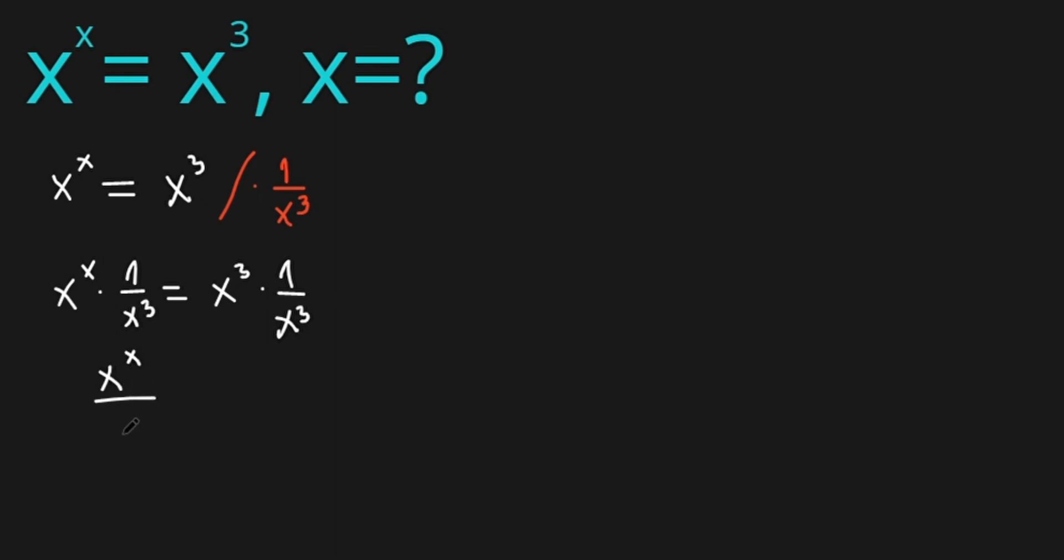x to the power of x over x cube equals, let's eliminate this and what's left is 1. So now we have x to the power of x minus 3 equals 1.